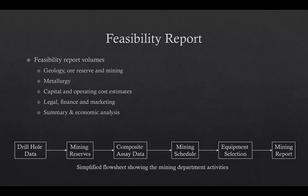Here is the simplified flow sheet showing the mining department activities in generating the feasibility report. It starts from using drill hole data to generate models of mining reserves and incorporating composite assay data — usually in the form of ore built in different blocks of the reserve — then developing a schedule for extracting ore from different sections of the reserves, selecting suitable equipment for mining, and ends at completing the mining report which becomes part of the feasibility report.